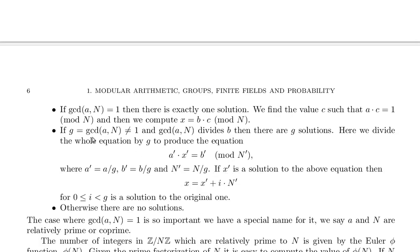If GCD, the greatest common divisor of a and n, is not 1, so they're not relatively prime, and the greatest common divisor of a and n divides b, then there are G solutions.